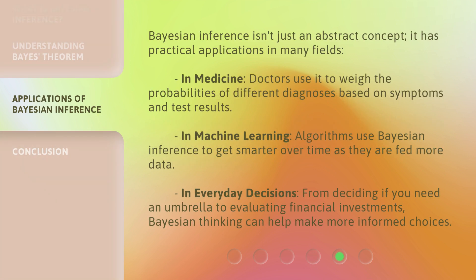Bayesian Inference isn't just an abstract concept — it has practical applications in many fields. In medicine, doctors use it to weigh the probabilities of different diagnoses based on symptoms and test results. In machine learning, algorithms use Bayesian inference to get smarter over time as they are fed more data. In everyday decisions, from deciding if you need an umbrella to evaluating financial investments, Bayesian thinking can help make more informed choices.